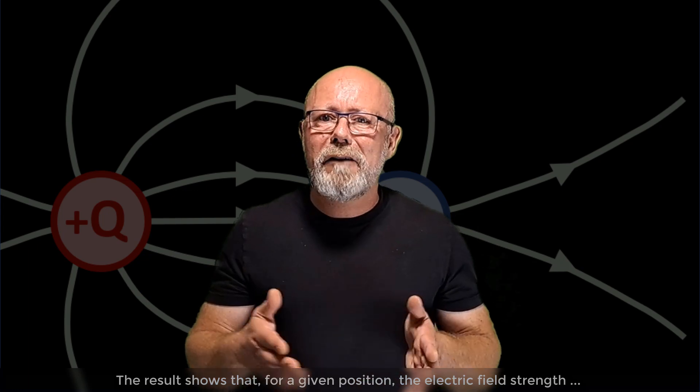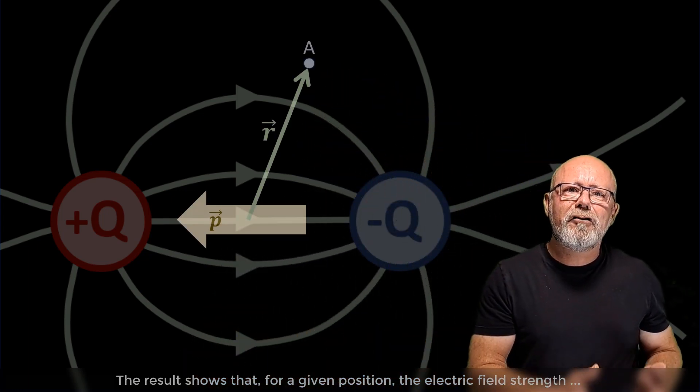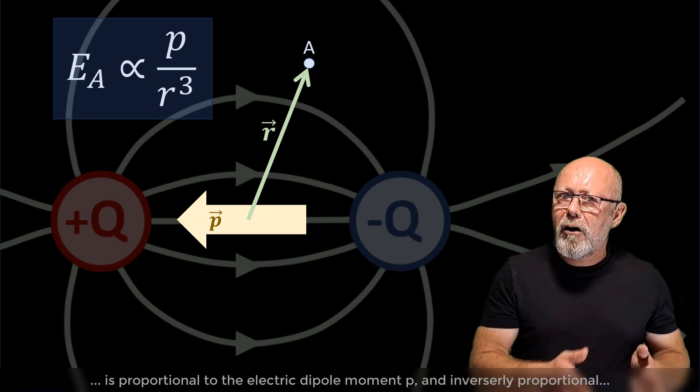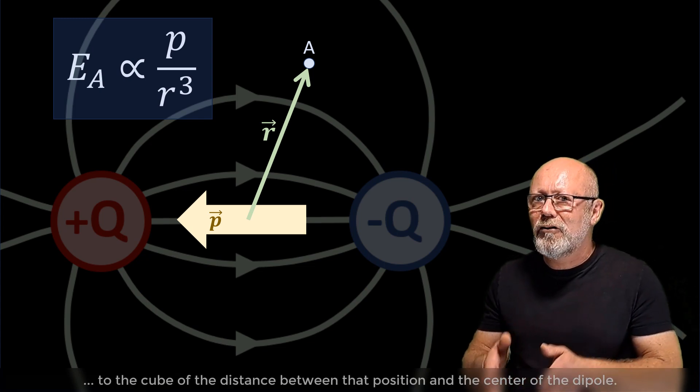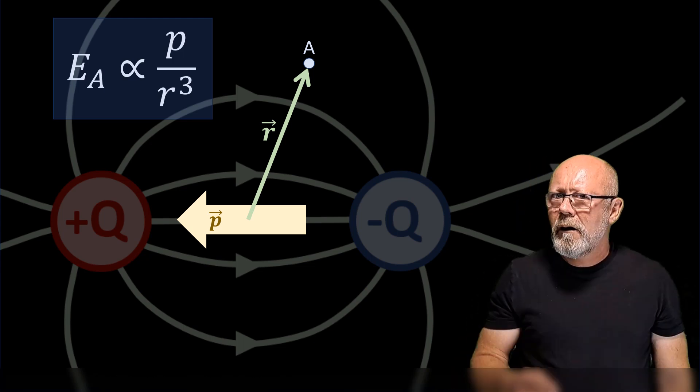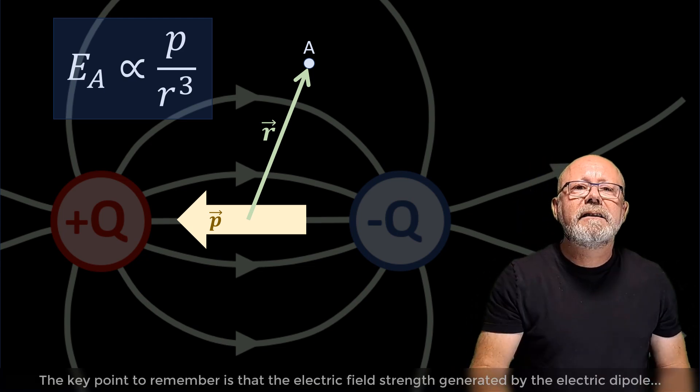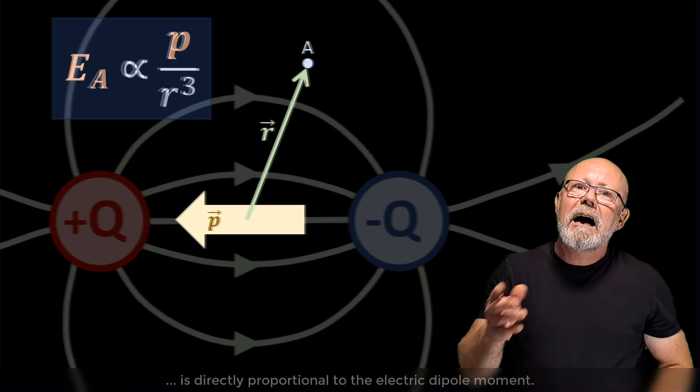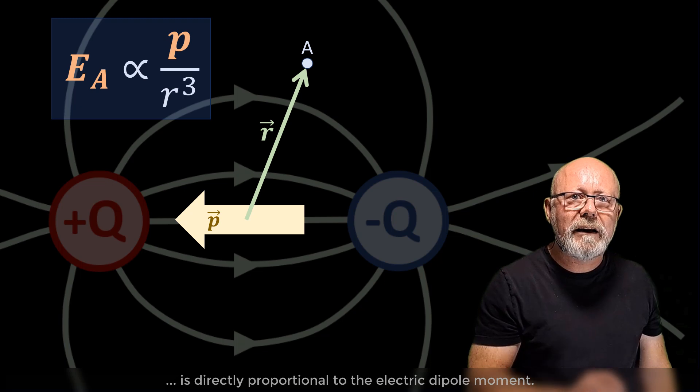The result shows that for a given position, the electric field strength is proportional to the electric dipole moment p, and inversely proportional to the cube of the distance between that position and the center of the dipole. The key point to remember is that the electric field strength generated by the electric dipole is directly proportional to the electric dipole moment.